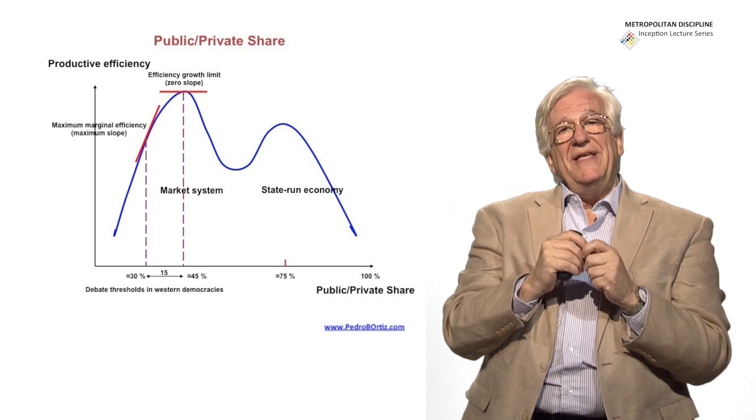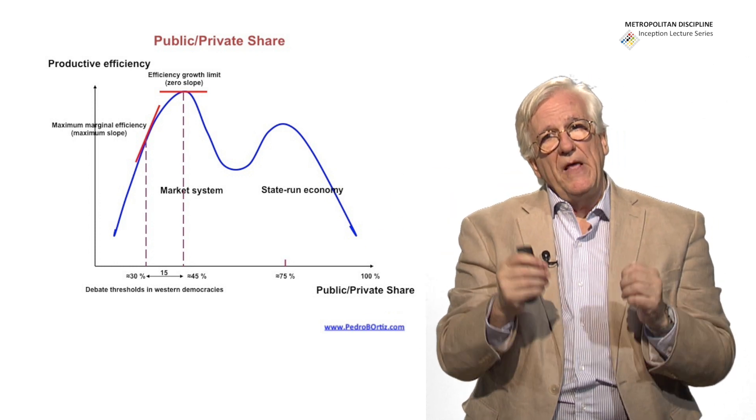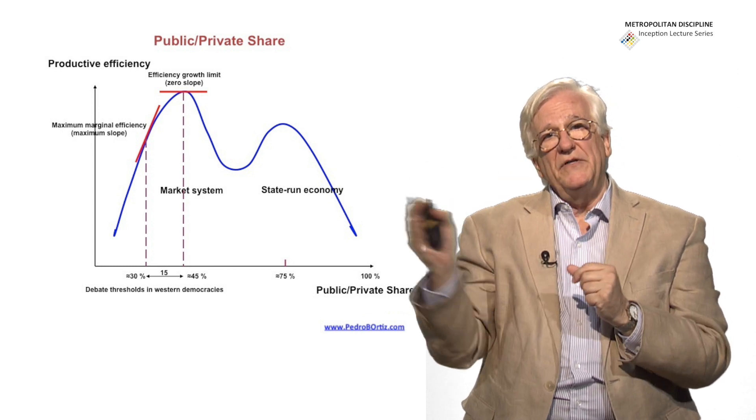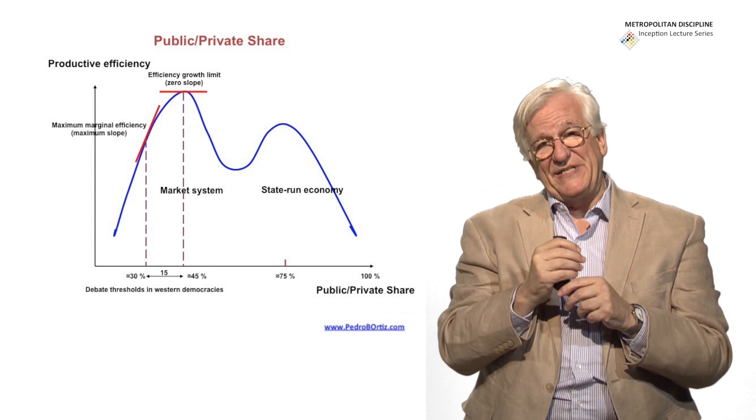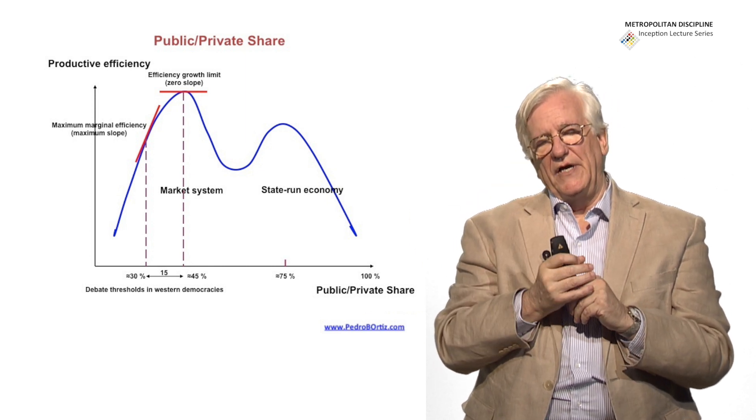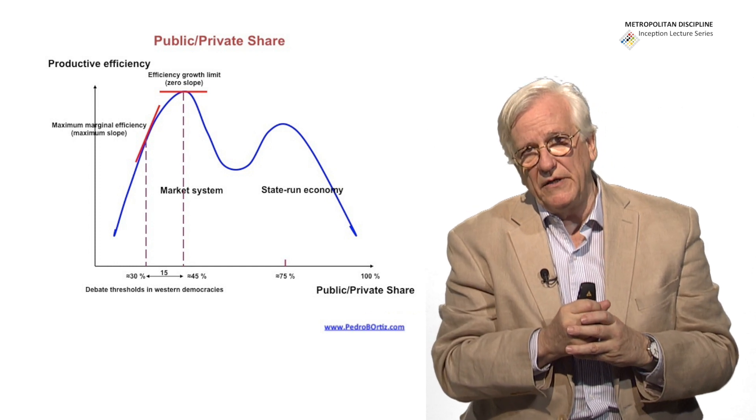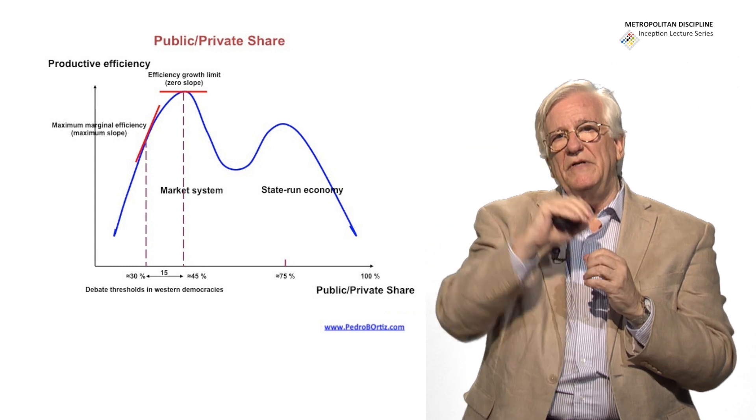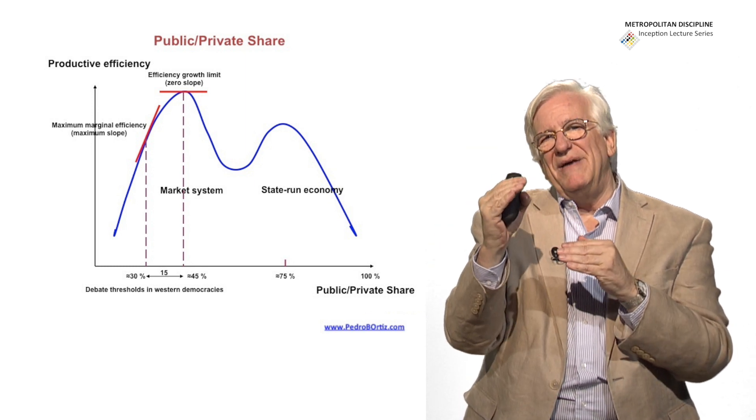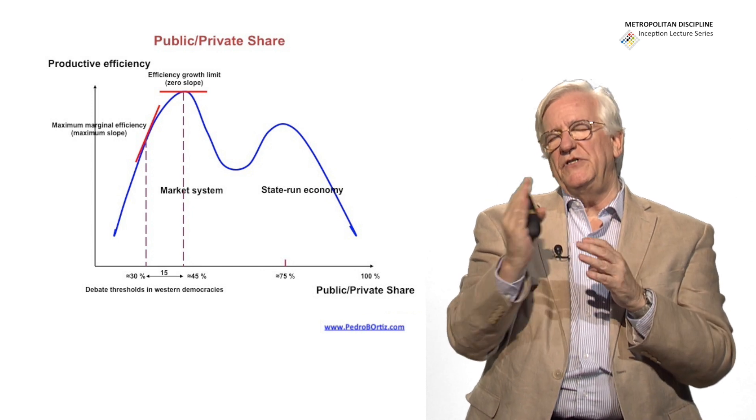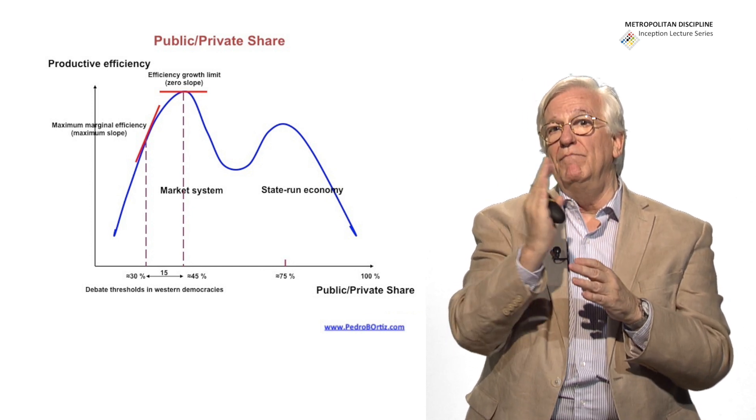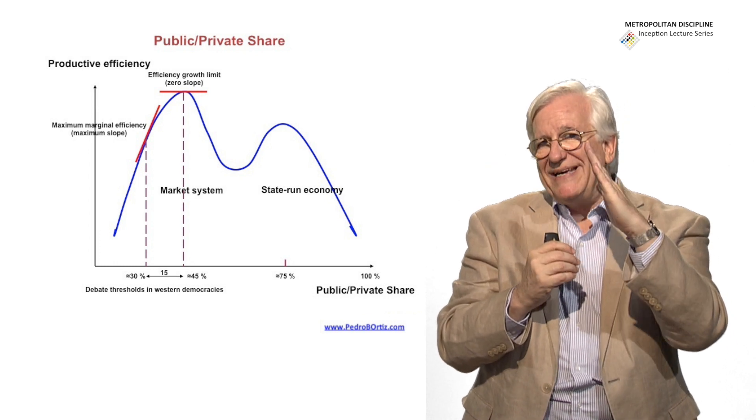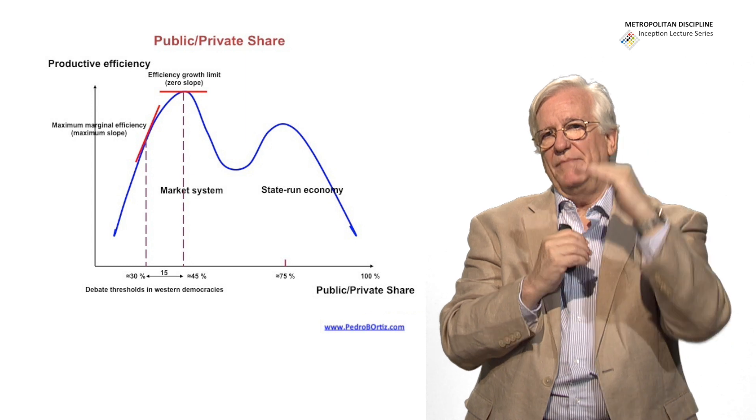But within the market-driven system, you have the top efficiency that requires an involvement of the government of around 40-45% of the economy, which is certain European governments and states are in that range, like France. When you reach the maximum efficiency, but that's not the maximum economic efficiency. The maximum economic efficiency is achieved when you have the maximum marginal returns. And that marginal returns is represented by the slope, not by the absolute number.